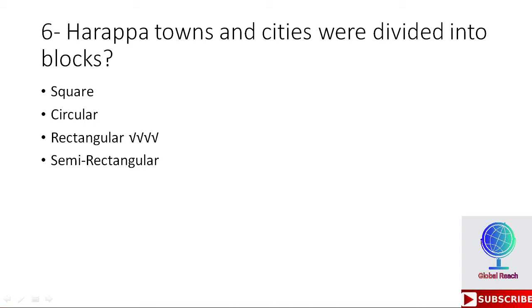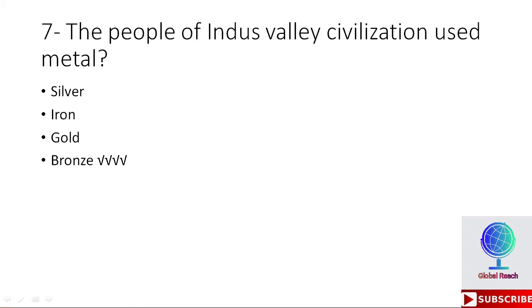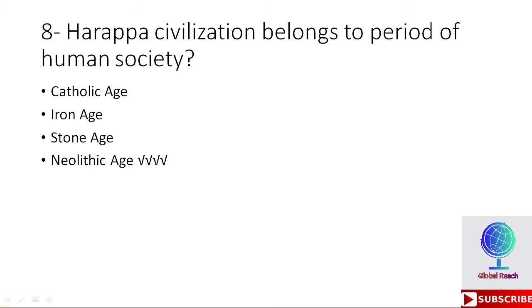MCQ 7: The people of Indus Valley civilization used metal — silver, iron, gold, or bronze? The right option is bronze. The people of Indus Valley civilization used bronze. MCQ 8: Harappa civilization belongs to a period of human society — Catholic Age, Iron Age, Stone Age, or Neolithic Age? The right option is Neolithic Age.